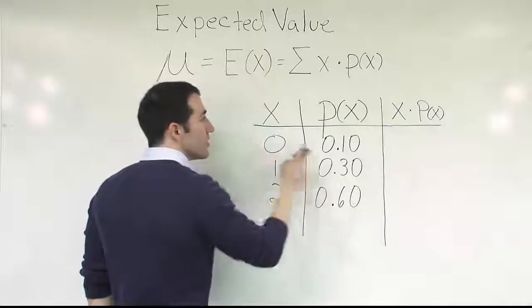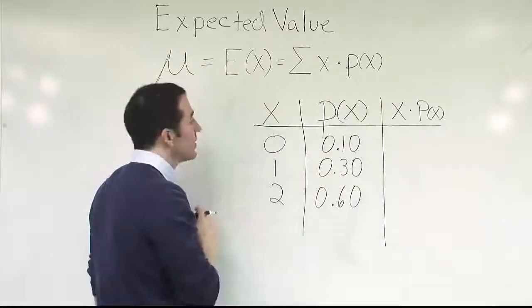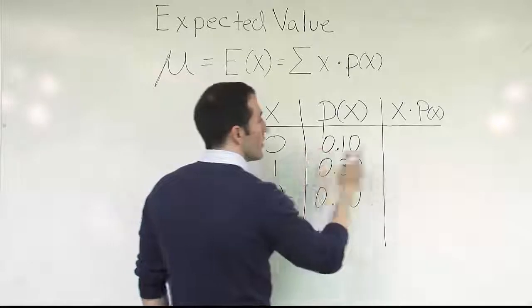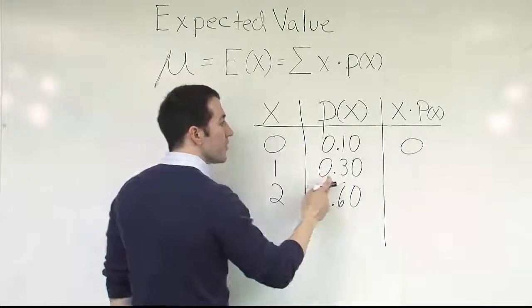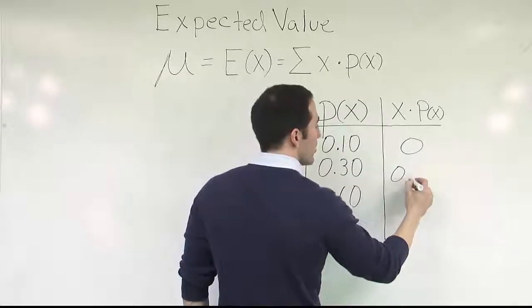So I'm going to create a new column on this chart here called x times p of x. And it just means we're going to go straight across, multiplying. That's it. So for example, 0 times 0.10 is going to be 0. 0 times anything is 0. 1 times 0.30 is going to give me 0.30.